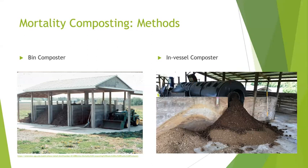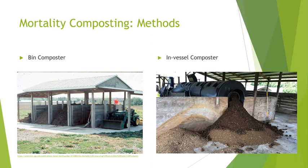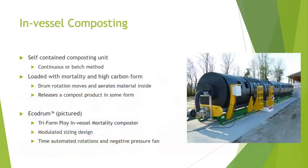The other option is an in-vessel system, sometimes called a rotary or drum composter. This style composter contains all of the mortality within a vessel, which aids in mixing and prevents off-site contamination and odors. In-vessel systems still require the proper ratios of inputs; however, since they're self-contained, they're less prone to excess moisture loss. With bin systems, you're more likely to have to add extra moisture every time you turn it to keep your ratios proper.